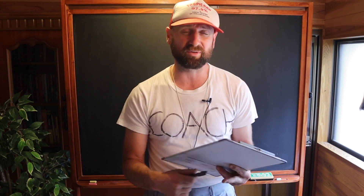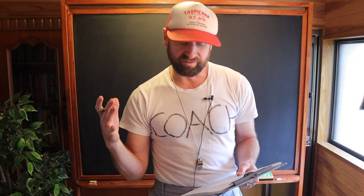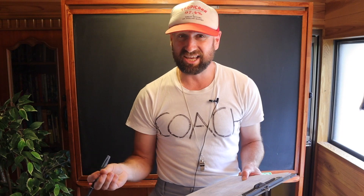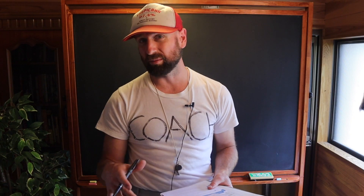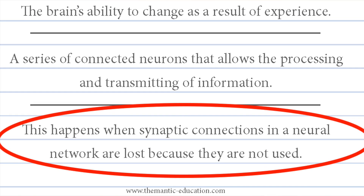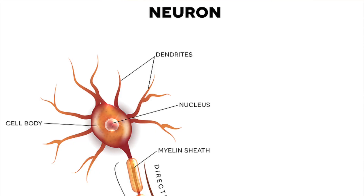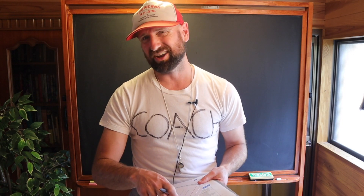All right, let's check your answers. Techniques to study the brain — hopefully you did some sort of technological technique like fMRI, MRI, PET, or CT scans. Localization of function — hopefully you wrote something like the idea that different parts of the brain perform different functions. Neuroplasticity is the brain's ability to change as a result of experience. Neural networks — hopefully you wrote down something like a series of connected neurons that allows the processing and transmitting of information. And neural pruning, more commonly known as synaptic pruning, is when synaptic connections in a neural network are lost because they're not used. A neuron is a type of cell that receives, processes, and transmits information through electrical and chemical signals. I don't know how they're going to ask a question about a neuron, but if you can diagram one, it'd be a great start.